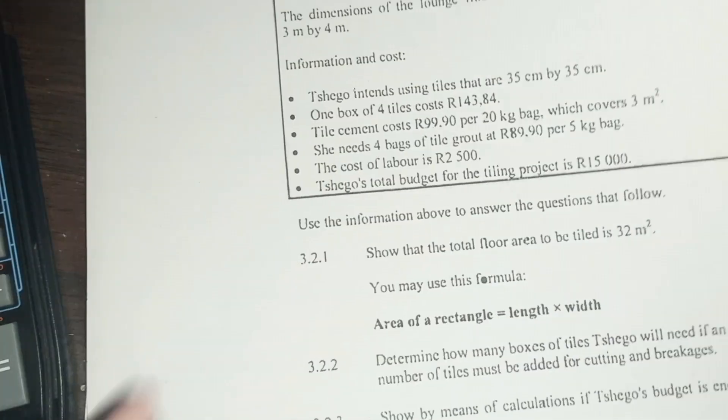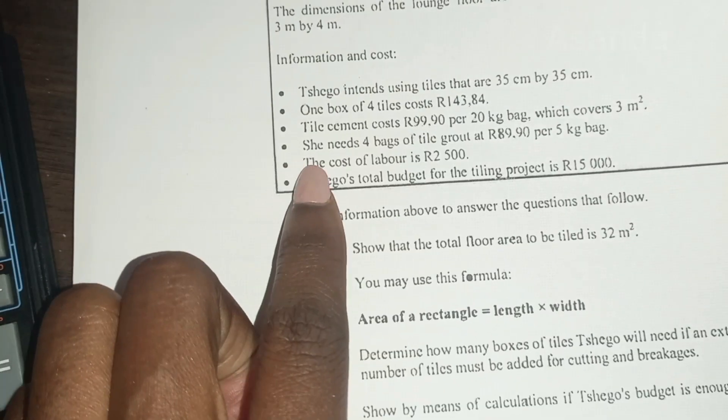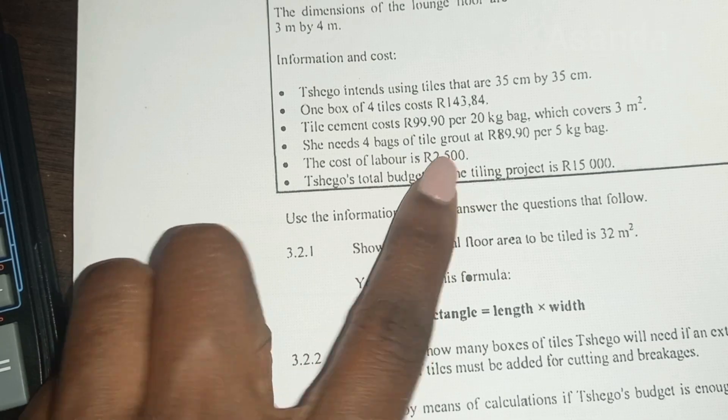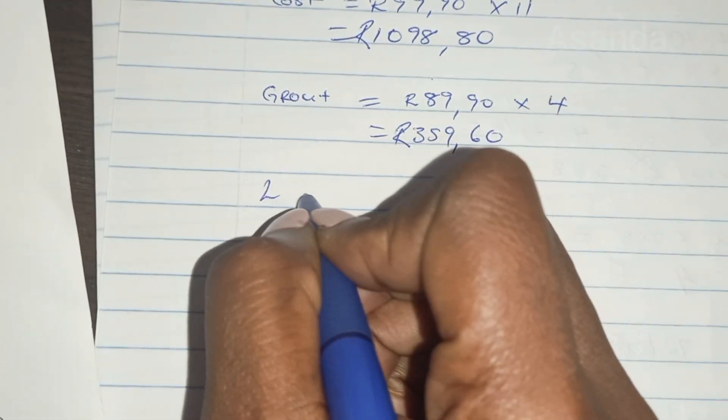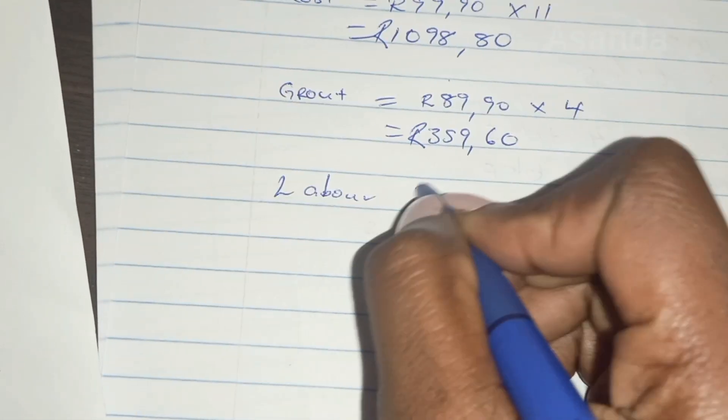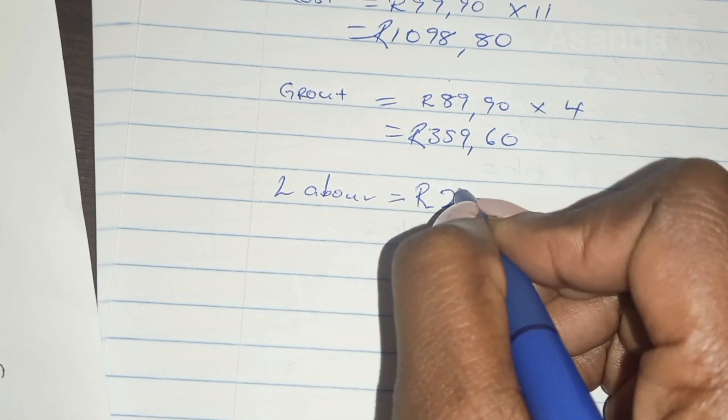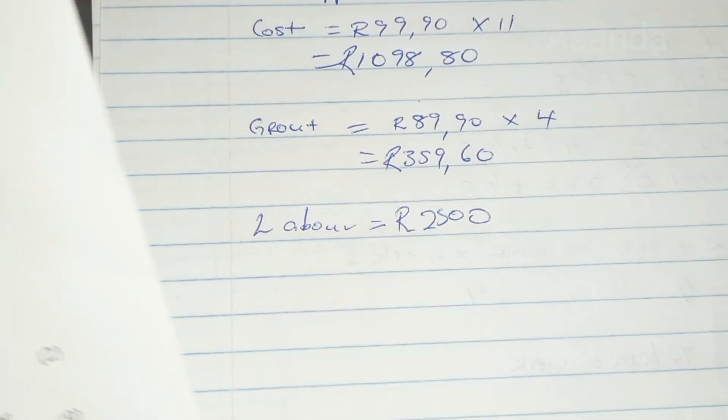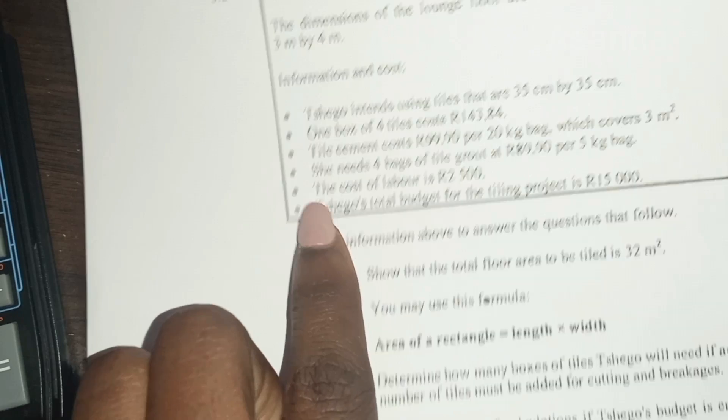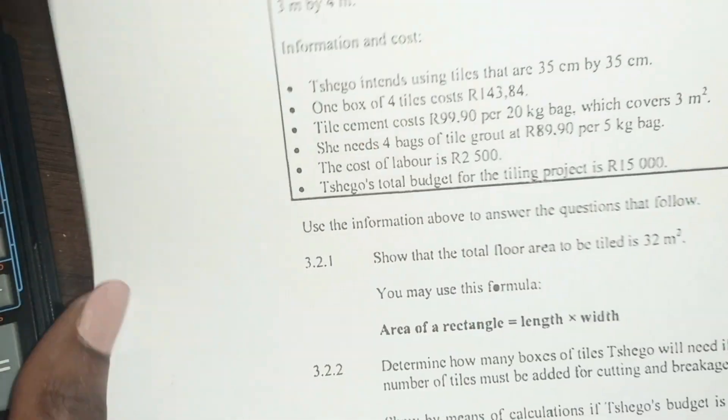So we're going to move on, find out what other cost we have. We have the cost of labor. So my labor here is 2,500 rand. There's no hours or anything like that. So that's the total. And then that's just the money that she's going to use.